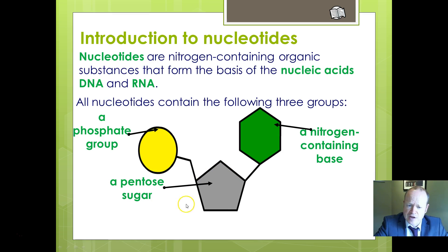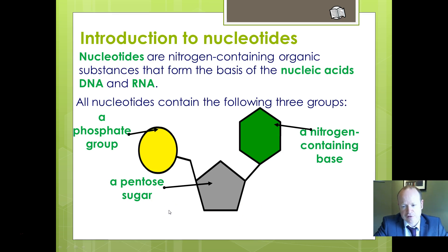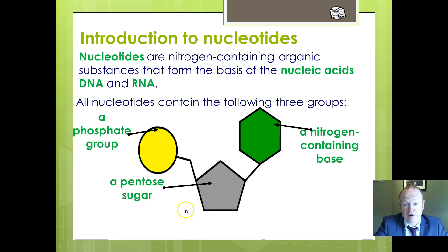The pentose sugar has a pentagon shape — it has five carbons, hence the name pentose sugar. You can also get hexose sugars, which unsurprisingly have six carbons and are in a hexagon shape. Pentose and pentagon both have five, so this is a five-carbon sugar.